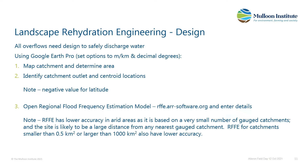Once you've come up with a plan, we need to do a bit of design work. Some of this you can do yourselves. Google Earth Pro is something everyone can access for free. You can measure the catchment area — if you know your landscape, you can work out where the water sheds from and determine the area. You can also determine the catchment outlet and centroid locations just by eye.